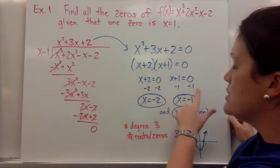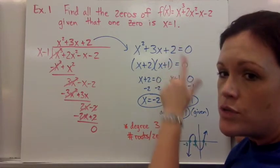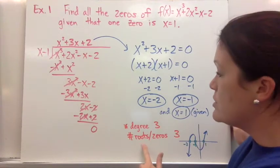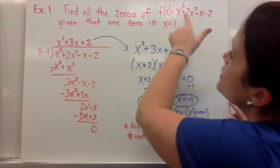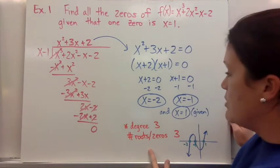You can set each factor equal to zero, and you can easily solve to get your other two roots, because you were given one of them. And notice I added this note here. The degree was 3 in our original function, and so we should end up with 3 roots or zeros by the time we're finished, and we did.